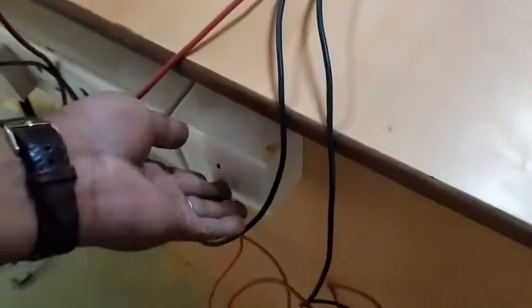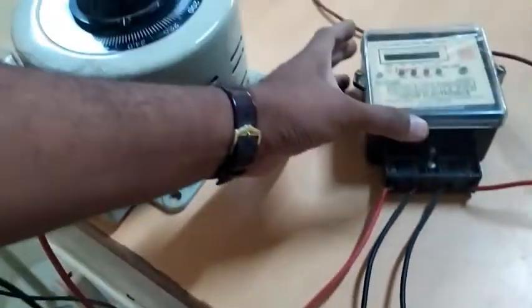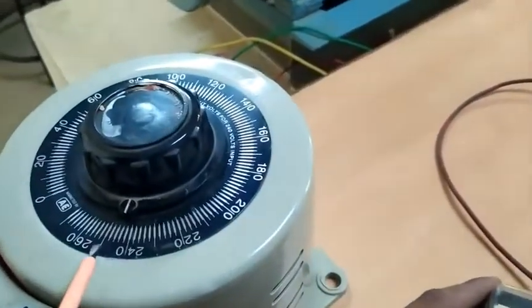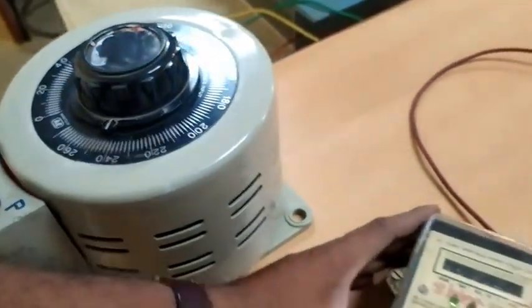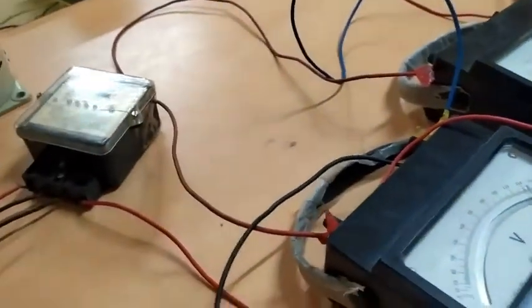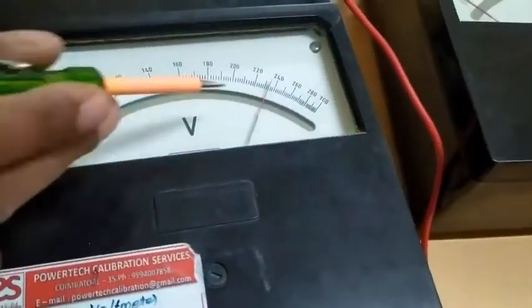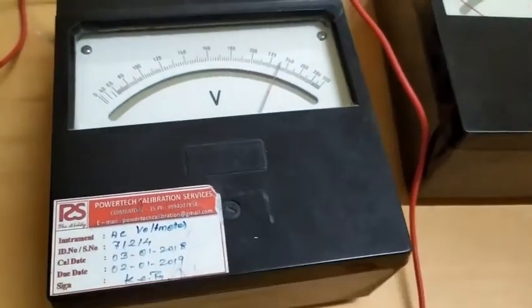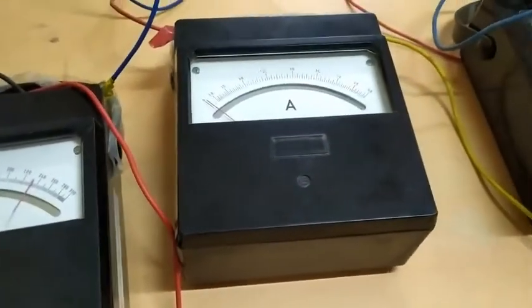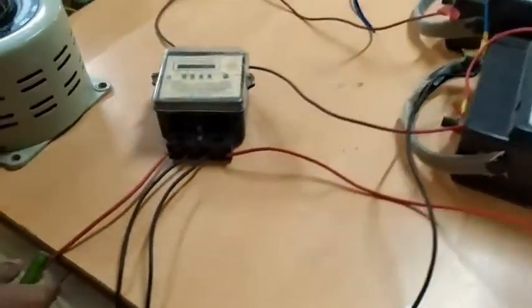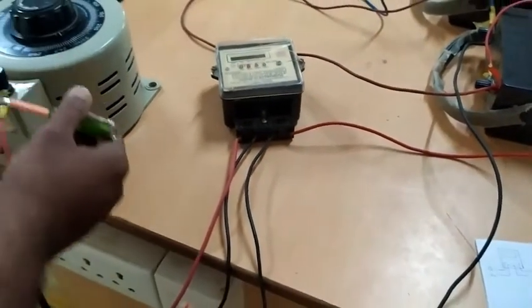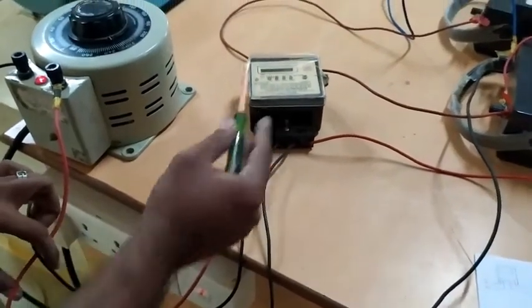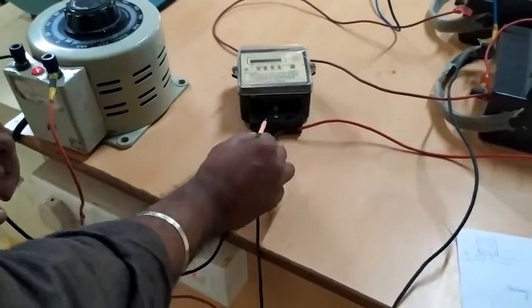Now I switch on the supply. I already put that autotransformer in 230 volt supply. 230. I am getting 230. Now I connect this supply from phase to the S1, neutral to S2.